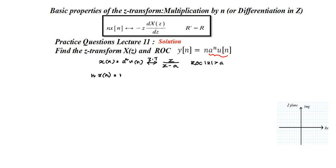Since the question is n · aⁿ · u(n), it is a product of x(n) and n. For the Z-transform of this signal we apply the multiplication-by-n property, also called the differentiation property: Z{n·x(n)} = -z · (d/dz) · X(z).